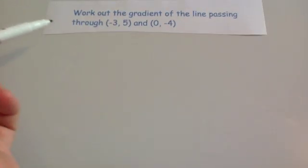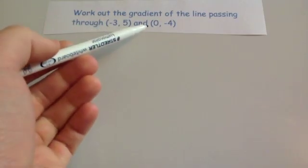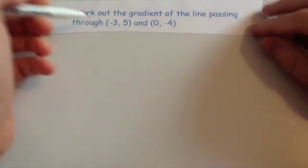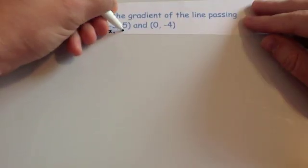Finally, work out the gradient of the line passing through (3,5) and (0,-4). So this one's further to the left, so label it x1, y1, x2, y2.